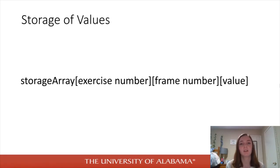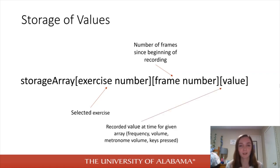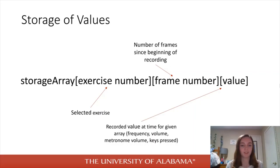I used a three-dimensional array to store values in the exercises feature of the Air Flute. The first part of the 3D array represents the selected exercise the student is attempting — right now it would be one through five. The frame number represents the number of frames since the student started recording, which is essentially the unit of time. The value represents whatever needs to be stored at that time — maybe what fingers were actually pressed, what fingers should have been pressed, what volume the student is playing at, or the output frequency.